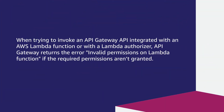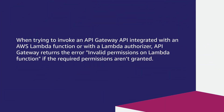When trying to invoke an API Gateway API integrated with an AWS Lambda function or with a Lambda authorizer, API Gateway returns the error 'invalid permissions on Lambda function' if the required permissions aren't granted.